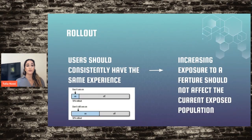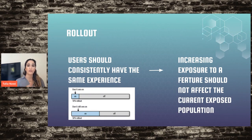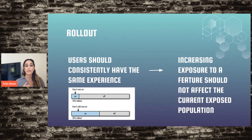For rollout, users should consistently have the same experience. If you're rolling out a feature and the flagging system decides the treatment should be on for a user, then every time that user visits they should have the same experience. Increasing exposure to a feature should not affect the current exposed population.